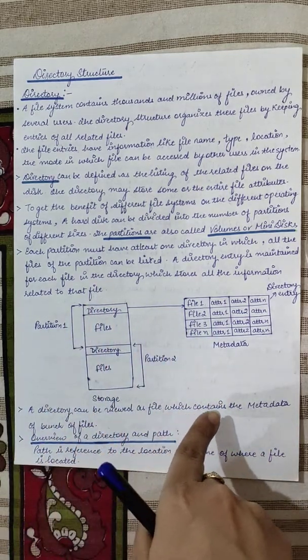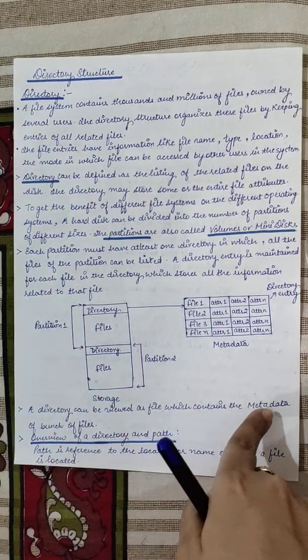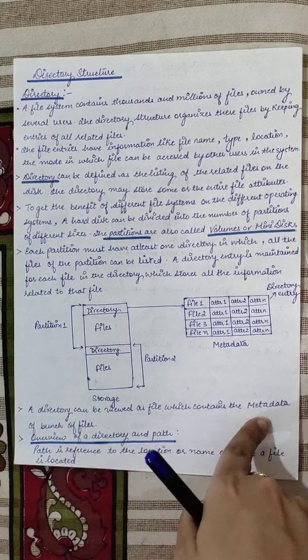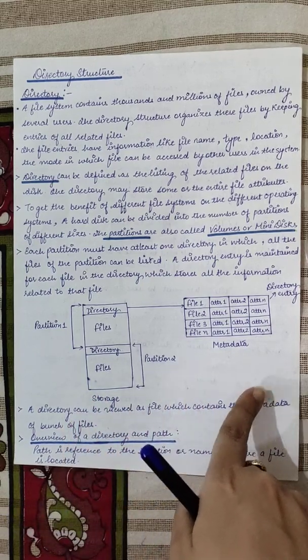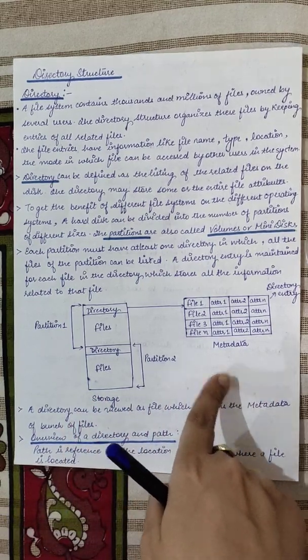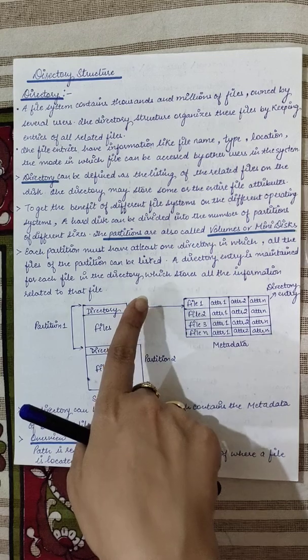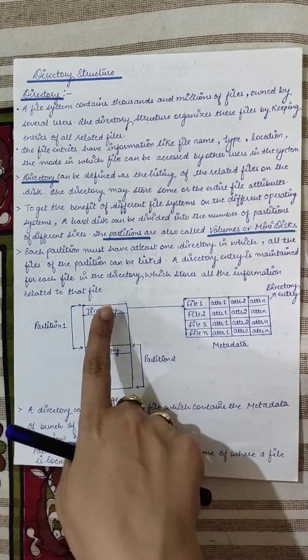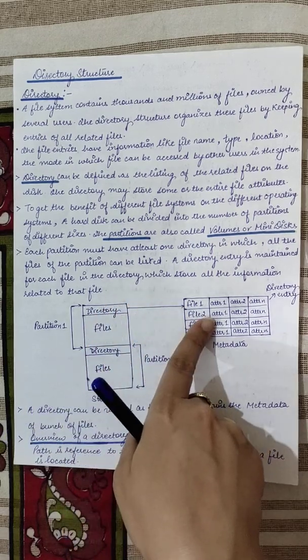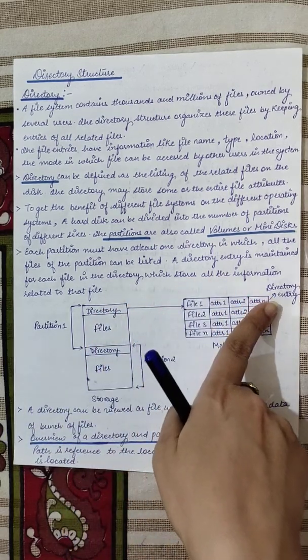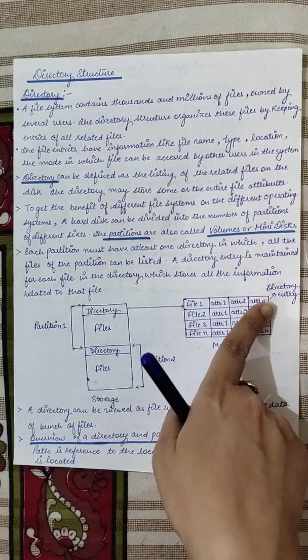A directory can be viewed as a file which contains metadata. Metadata means data about data — the directory stores data which again refers to other data, which is why it is considered metadata.